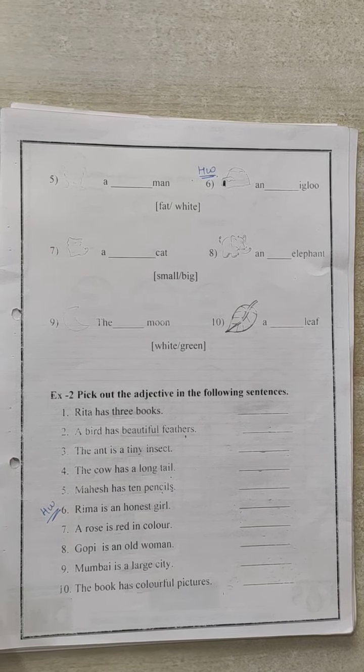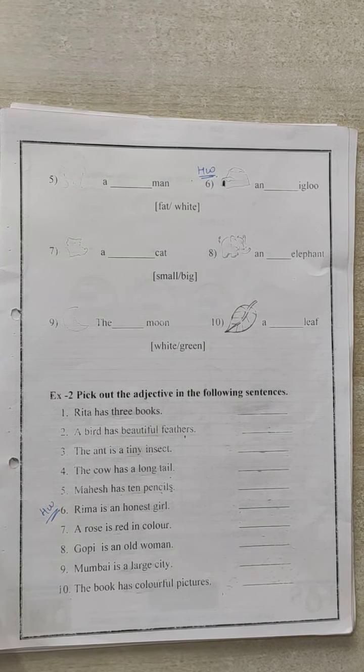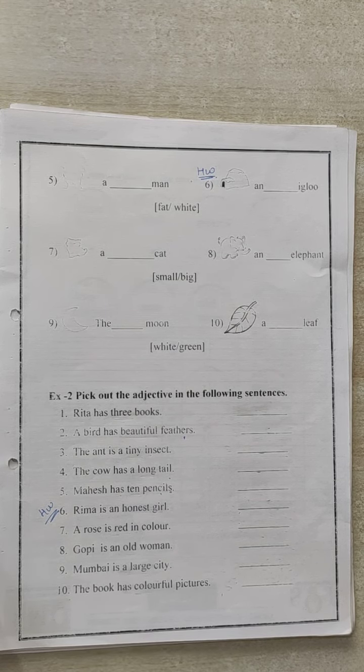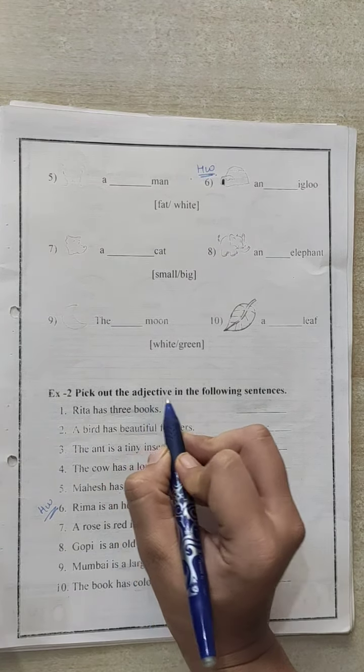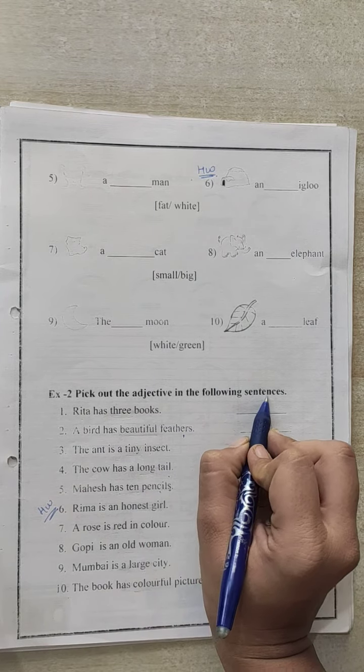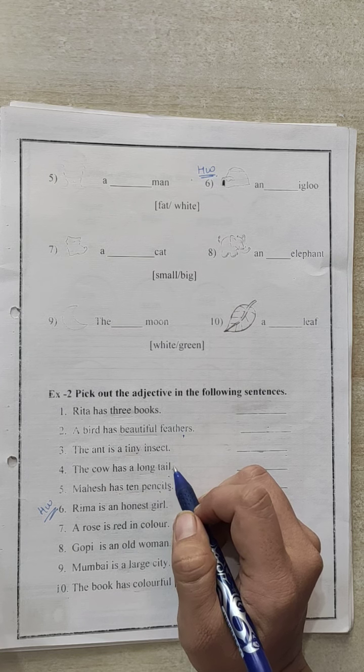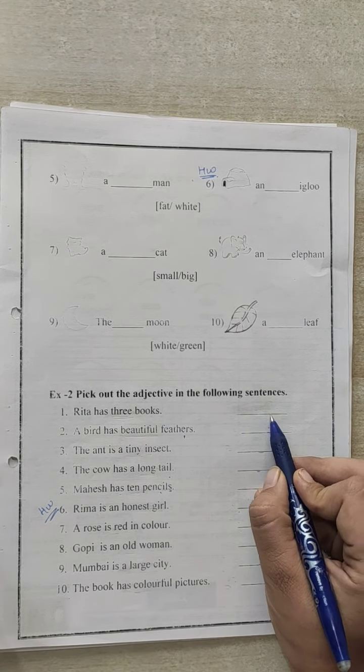Good morning students. In the previous video of adjectives, we had seen exercise number 1. Today we are going to see exercise number 2. Pick out the adjective in the following sentences. Here sentences are given and we have to pick out the adjective from that sentence and write it here in the blanks.